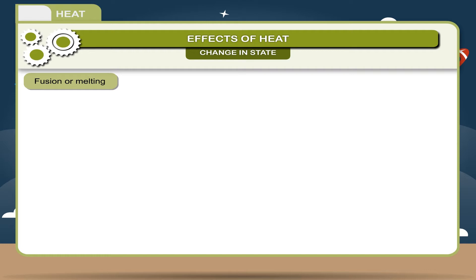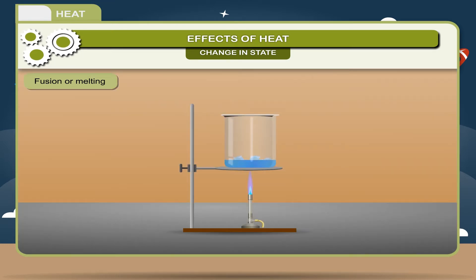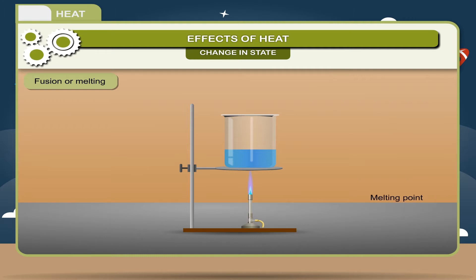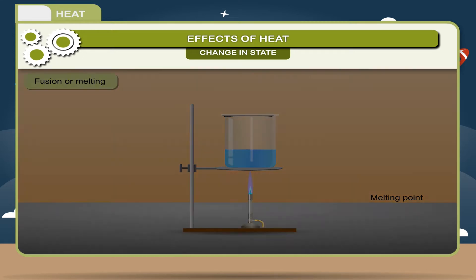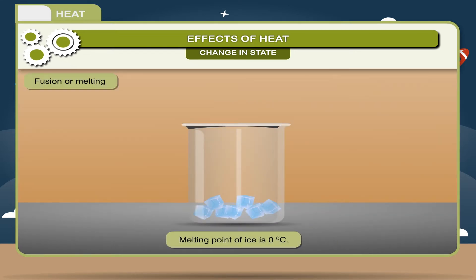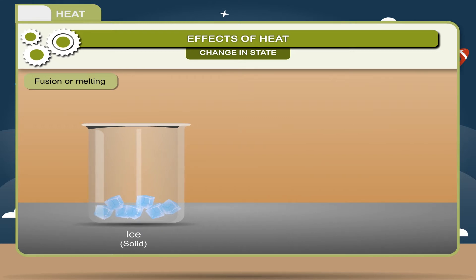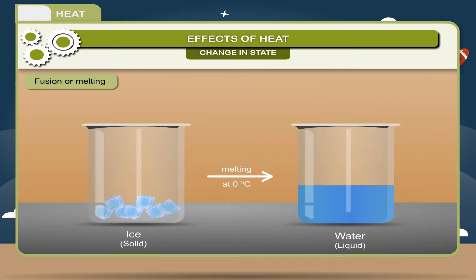Fusion or Melting: Fusion is a phenomenon in which a solid changes into liquid by absorbing heat. Melting takes place at constant temperature, called the melting point, which is different for different substances. For example, the melting point of ice is 0 degree Celsius. Ice, a solid, melting at 0 degree Celsius gives rise to water, a liquid.